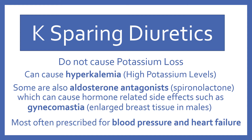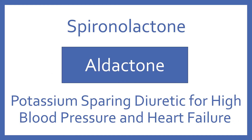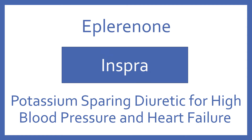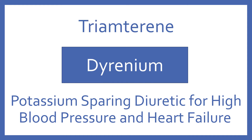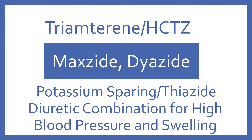Specific potassium-sparing diuretics include: Spironolactone, brand name Aldactone, for high blood pressure and heart failure. Eplerenone, brand name Inspra, for high blood pressure and heart failure. Amiloride, brand name Midamor, for high blood pressure and heart failure. Triamterene, brand name Dyrenium, for high blood pressure and heart failure. And triamterene with HCTZ, brand name Maxzide or Dyazide, a potassium-sparing thiazide combination for high blood pressure and swelling.